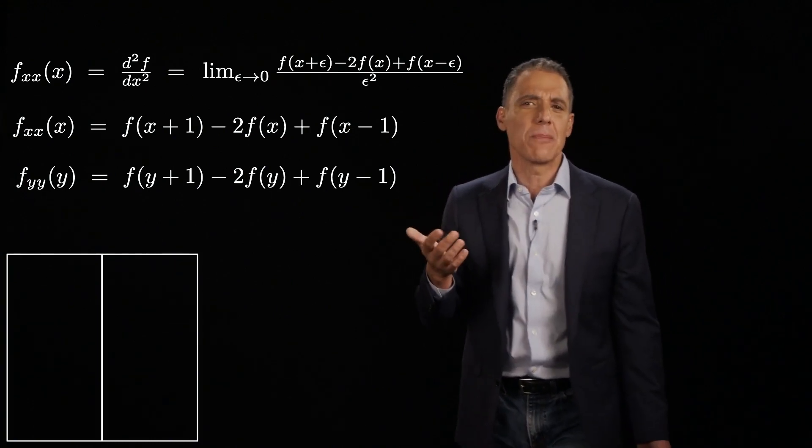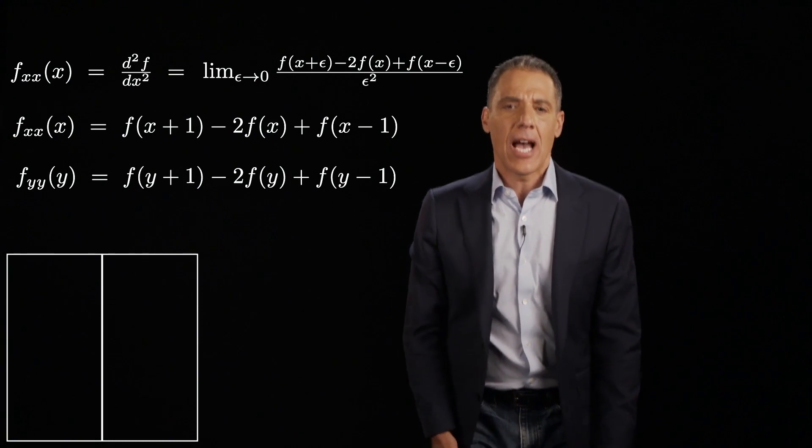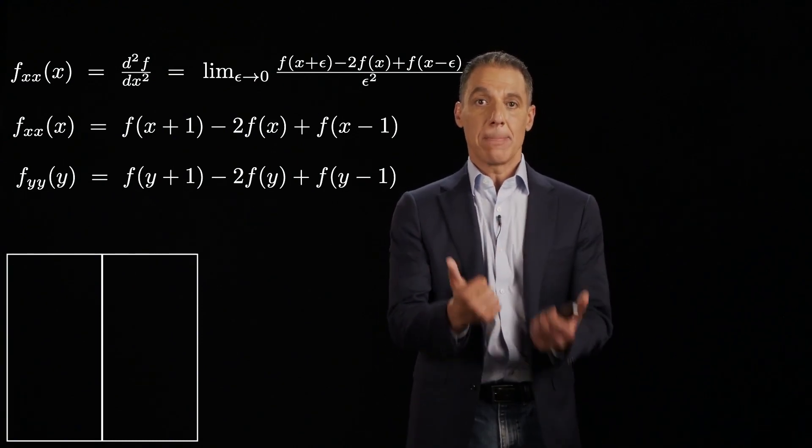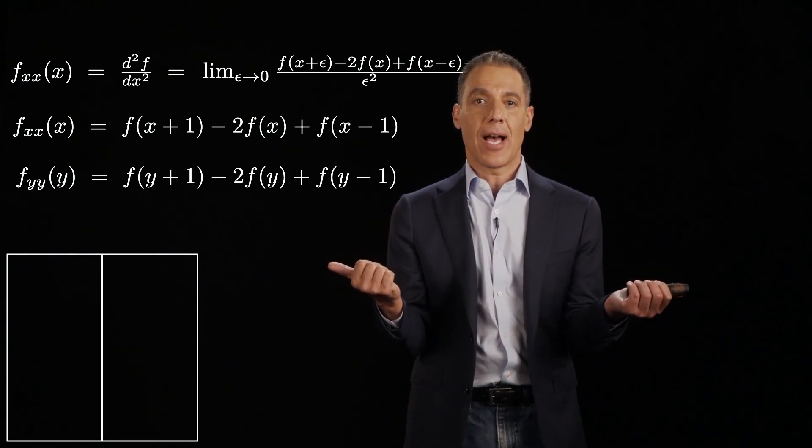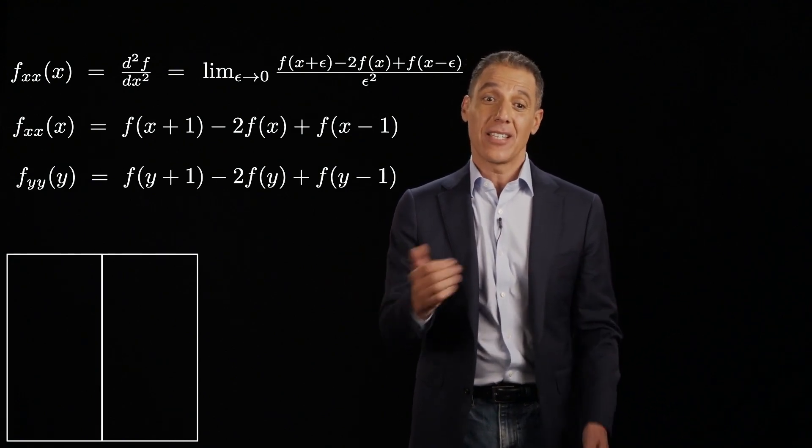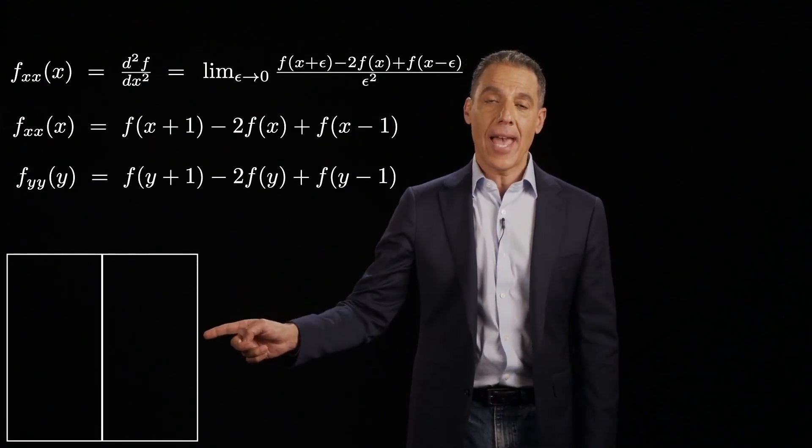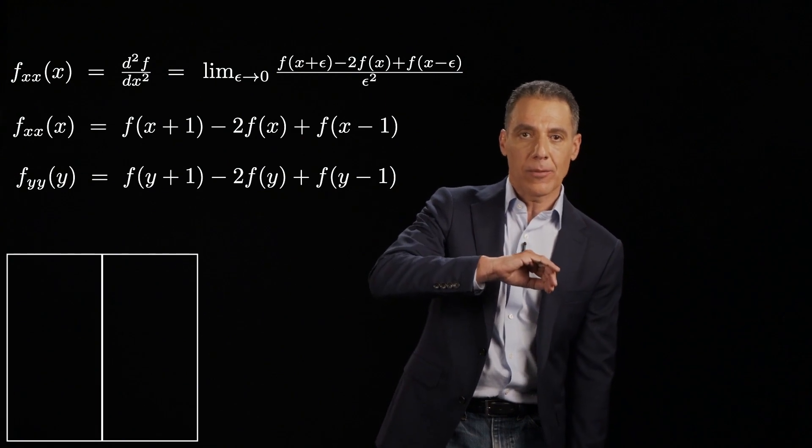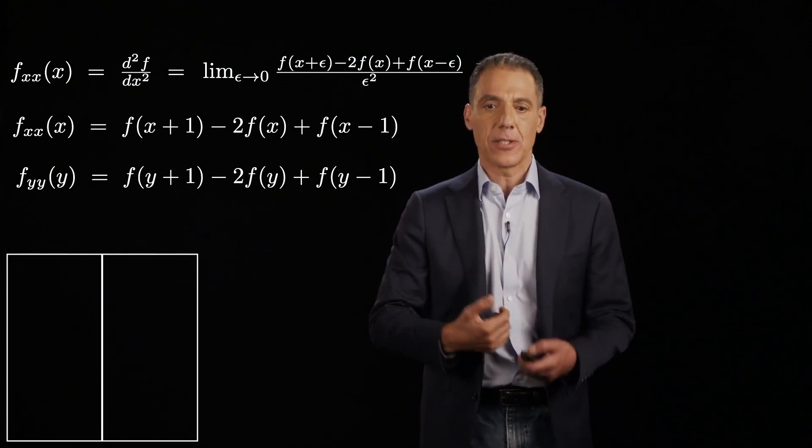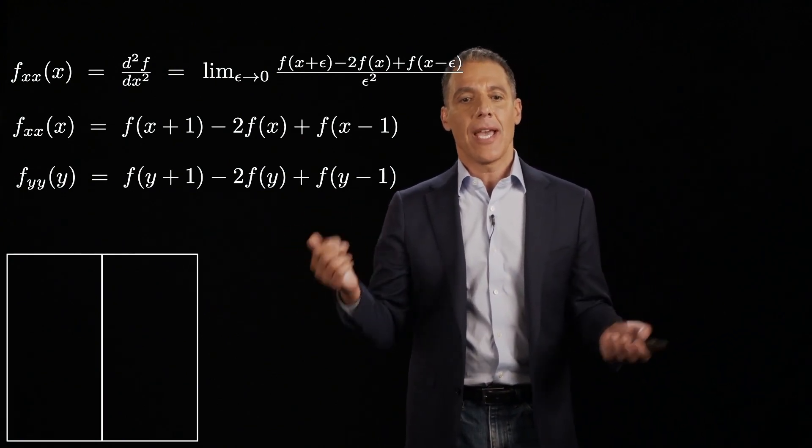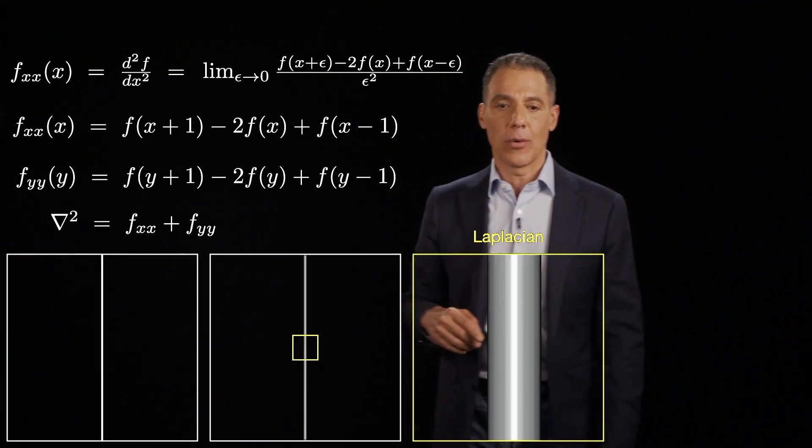So let's see if this actually makes sense. What am I asking? I'm asking, what is the difference between me and my neighbors, one on either side? And that sounds a lot like a line, not an edge. I'm not asking, am I going from bright to dark? I'm asking, am I different than my two neighbors? And that's what the second derivative is going to get us.